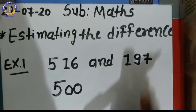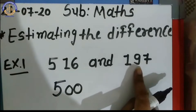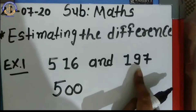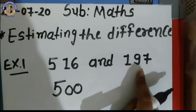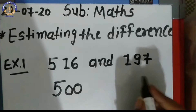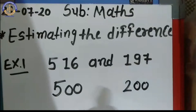Now, 197 — we also check the tens place. There is a 9. If the number is equal to 5 or greater than 5, we round up. So, 197 is rounded up to 200.